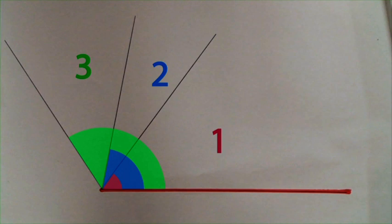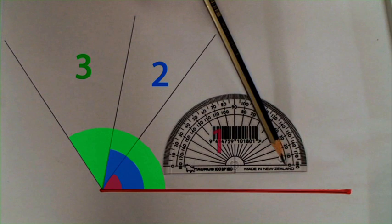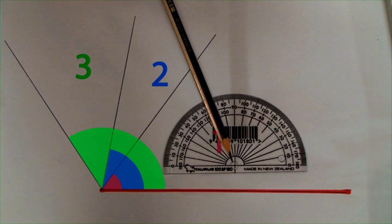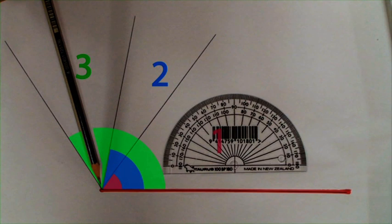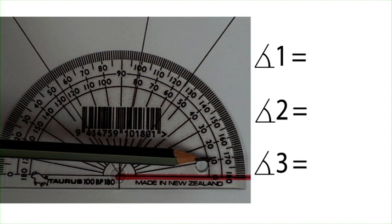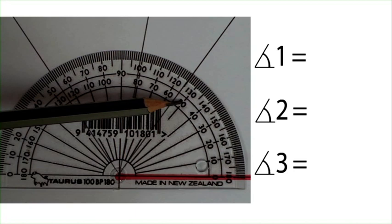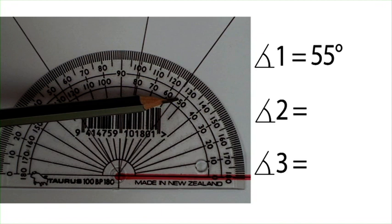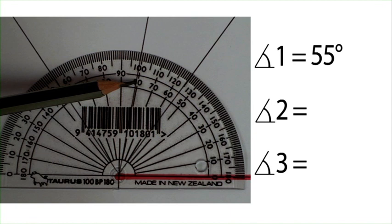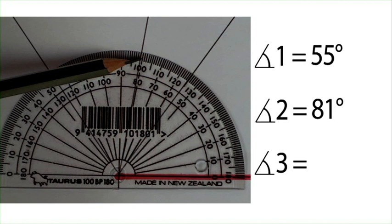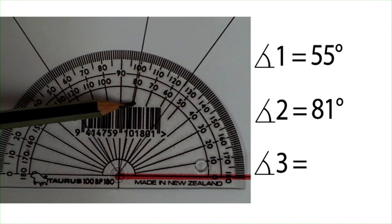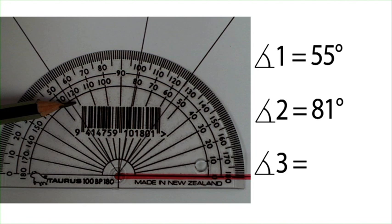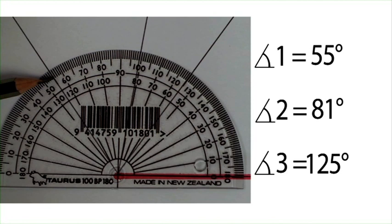We place the bottom line of the protractor onto the red line at the base of the page, and this intersection needs to be on that point. We line our protractor up with this point. The first angle is 10, 20, 30, 40, 50 — then going to the outside scale we add another 5, giving us 55 degrees. The second angle is further around — just over 80, in fact it's 81 degrees. The third angle has gone past 90, right around here — we're still on the inside scale, so it's 120 plus, looking on the outside scale, another 5. This outside angle is 125 degrees. That's how we use the protractor.